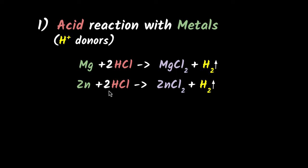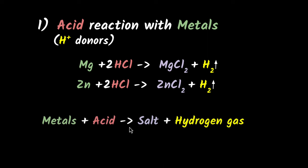In general, what can we say about what happens when metals react with acids? Metals react with acids to give you a salt, and you get hydrogen gas. Let's actually look at an experiment now.